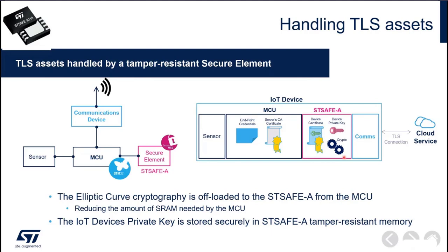All cryptographic operations run on the STSAFE A side, meaning the key will never be exposed outside the secure element. This gives much better security than a solution using only the microcontroller. On an MCU like the STM32, we do have some security through the firewall, which separates a secure enclave from normal code to reduce the risk of malicious code accessing the keys. KMS runs in the secure enclave — it's not as good as STSAFE A, but it's a good level of security for a general-purpose microcontroller. STSAFE A110 can thwart silicon-invasive attacks and allows offloading elliptic curve cryptography.